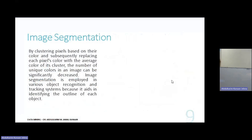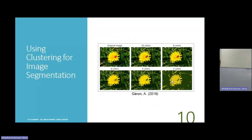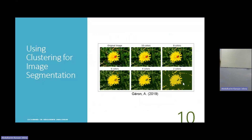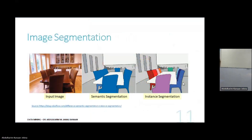There are many applications. Image segmentation is another one — you can reduce the number of unique colors inside images. Here is the original image; here we cluster all pixels into only 10 colors. Then we have 8 colors, 6 colors, 4 colors, 2 colors. All pixels that are similar or near in value to each other are assigned to two clusters — either yellow or green, for example.